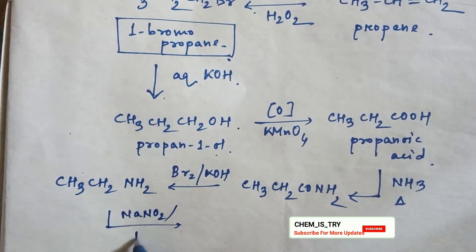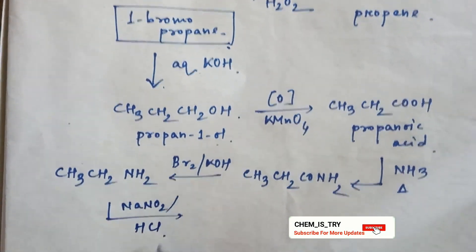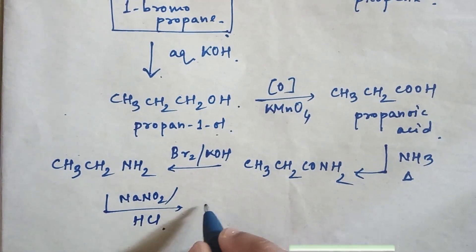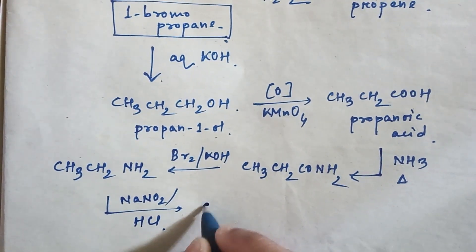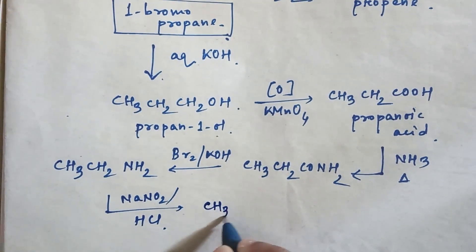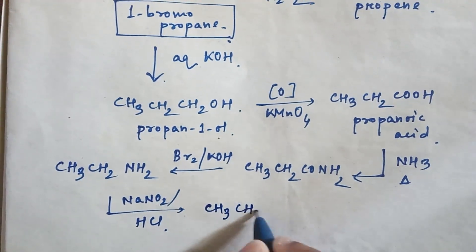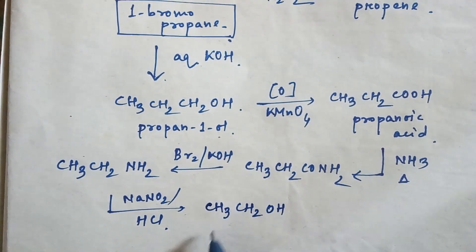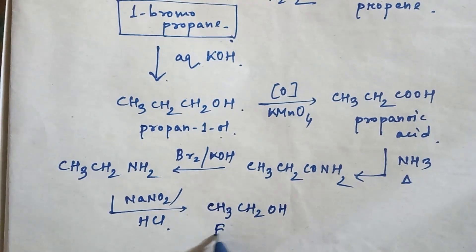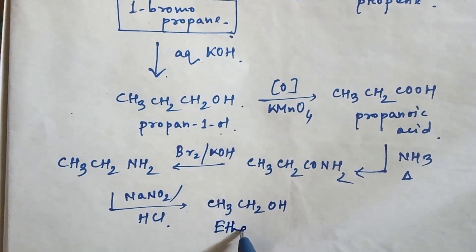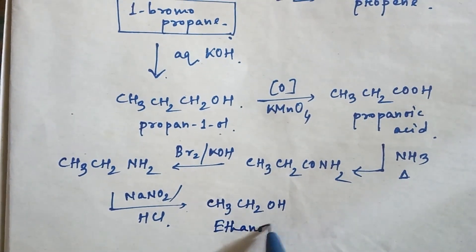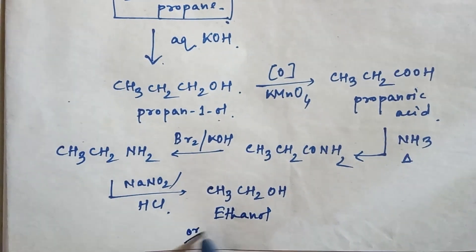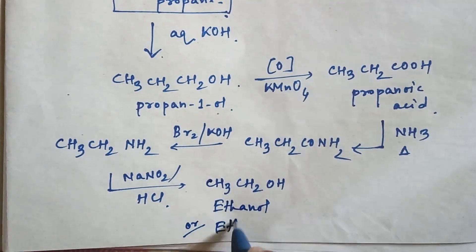Now in ethylamine, if you use sodium nitrite and HCl, then this amine will convert into an alcohol. The product will be CH3CH2OH — that is ethanol or ethyl alcohol.